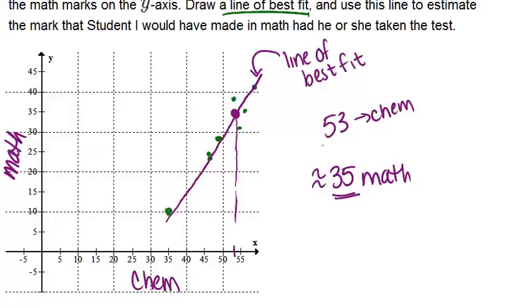You could just plug in 53 for x in your equation and see what you get for y, and that would give you your answer, just as you can read it off the graph like we did. It's just sometimes it's sort of hard to read off the graph.